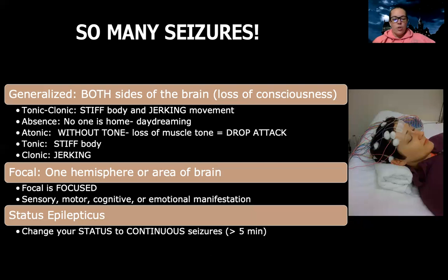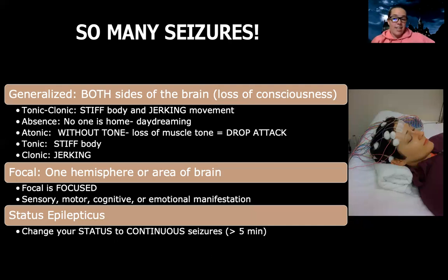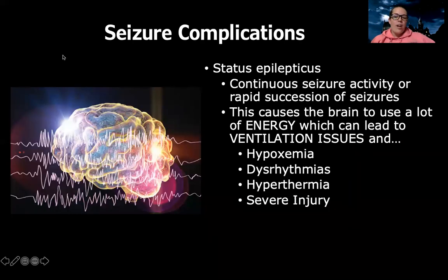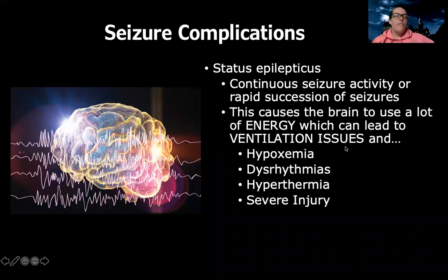The worst possible type, the most serious emergency, is what's called status epilepticus. This is a seizure that lasts greater than five minutes — a continuous seizure. If it's greater than five minutes, that's how you get qualified as having status epilepticus, a seizure that does not quit. It can either be continuous seizure activity or a whole bunch of seizures back to back. This causes your brain to use a ton of energy, wears you out, can lead to ventilation issues, lack of oxygenation, abnormal heart rhythms, hypothermia, and severe injury.